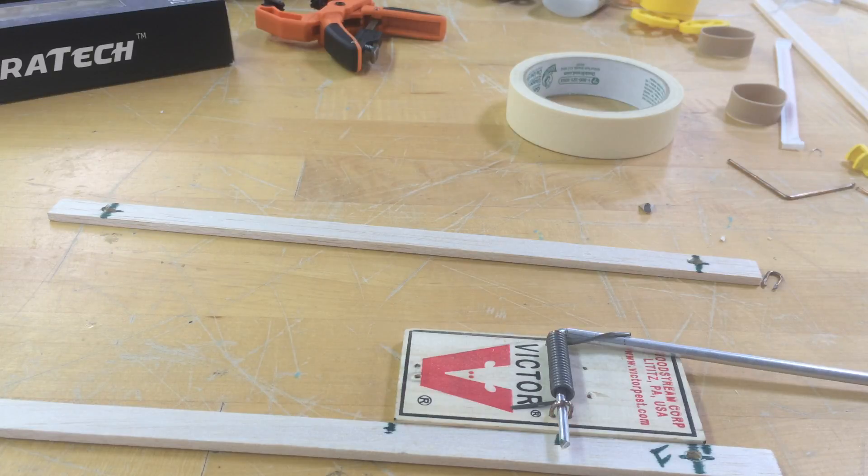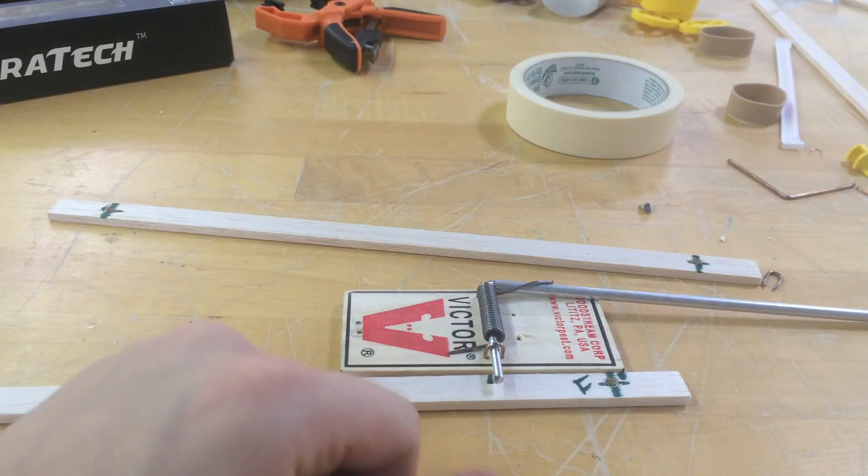So that's where my mousetrap is going to sit on that wood piece, and then you're going to go back and do it again for your other rail.